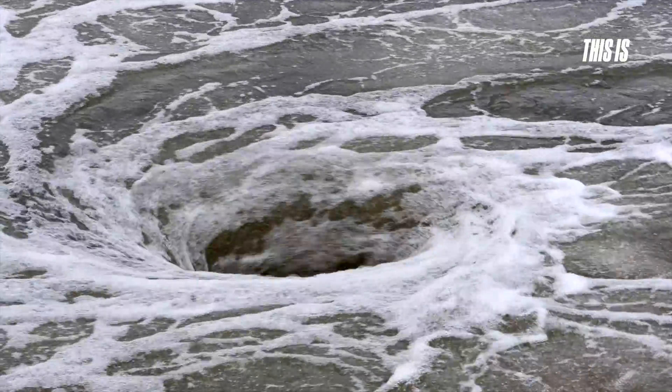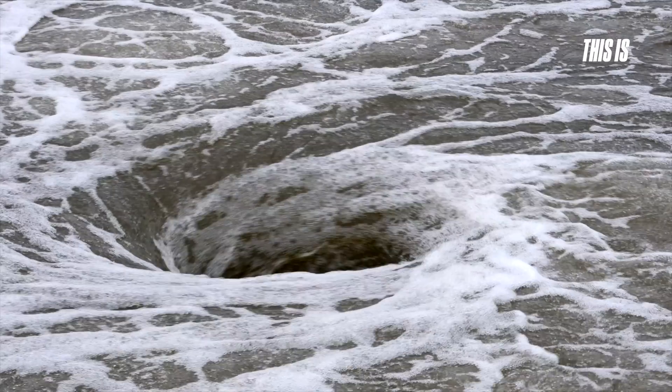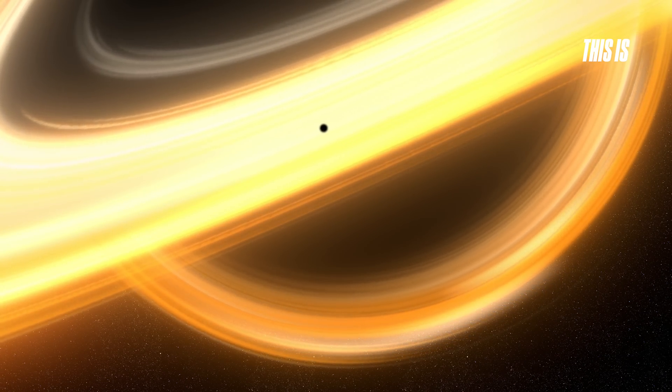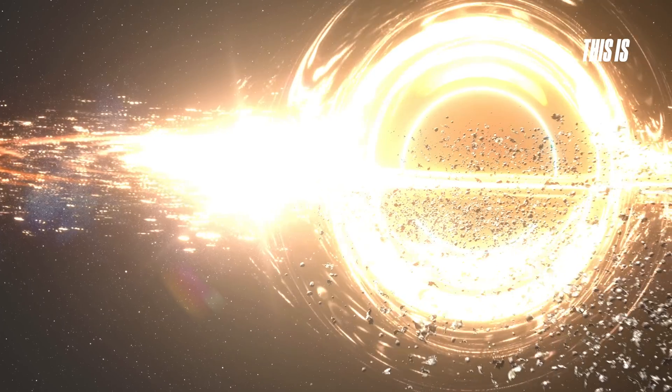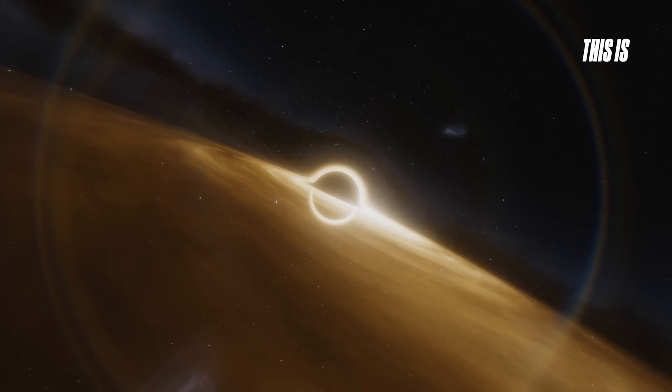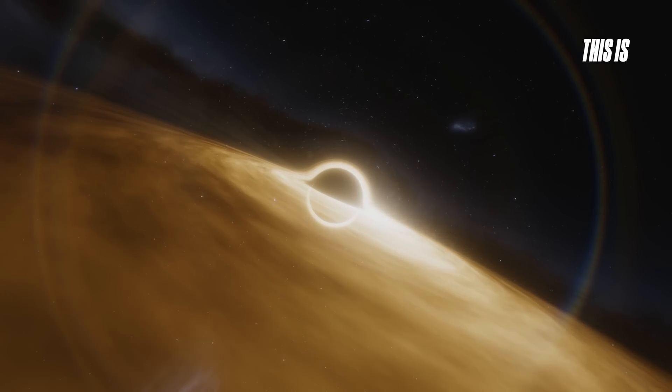Falling into a black hole is often compared to a whirlpool. Once you're caught, there's no way out. But in reality, it works a little differently. Matter doesn't just fall straight in, like a rock into a well. Instead, it usually orbits the black hole first, spiraling inward in the glowing disk of superheated gas and dust, known as the accretion disk.